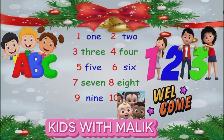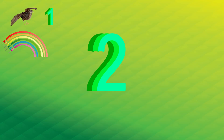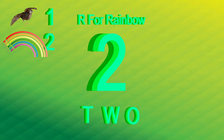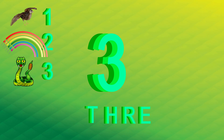Welcome to my channel Kids with Malik. 1 - O N E. Q for quail. 2 - T W O. R for rainbow. 3 - T H R E E. S for snake. 4.